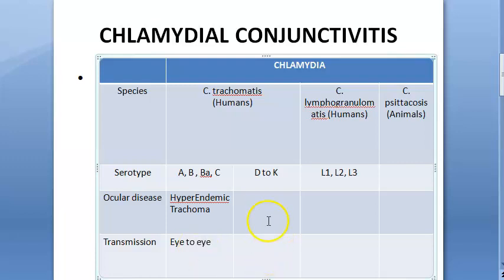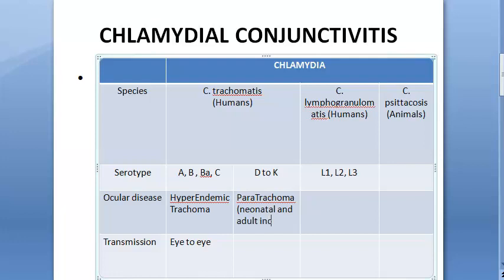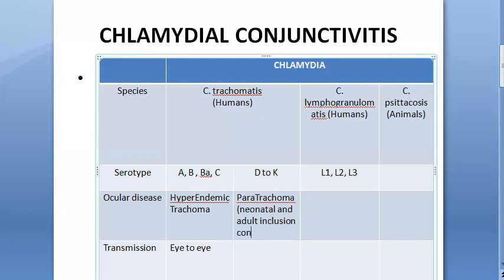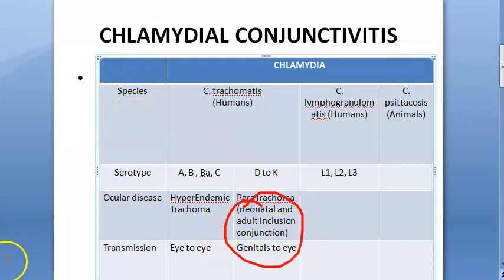The D to K serotypes of Chlamydia trachomatis lead to what is called adult inclusion conjunctivitis. It is called paratrachoma, or neonatal and adult inclusion conjunctivitis. This one spreads from genitals to eye. We are concerned only with trachoma here; we will not deal with paratrachoma or adult inclusion conjunctivitis.